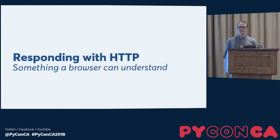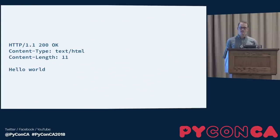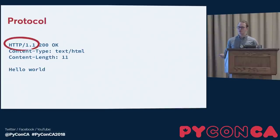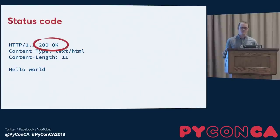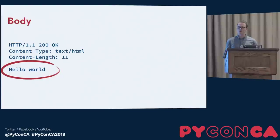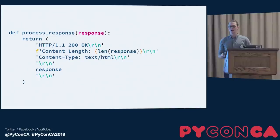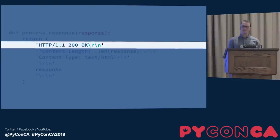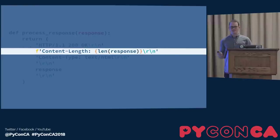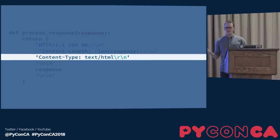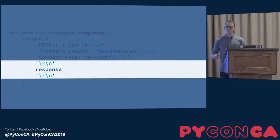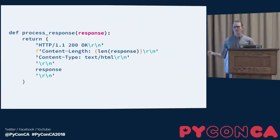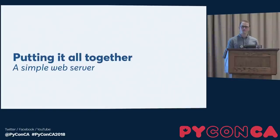We also need to respond with valid HTTP. An HTTP response has a protocol, a status code, headers, and a body. We give it a response string, embed it in a valid HTTP response: send back "200 OK" (our server assumes everything is always fine), dynamically compute content length, say it's text/HTML, then send a newline followed by the response body and a final newline. Tying together request parsing, response formatting, and a simple view in between — we have a working web server.